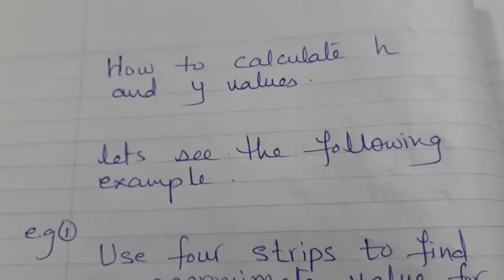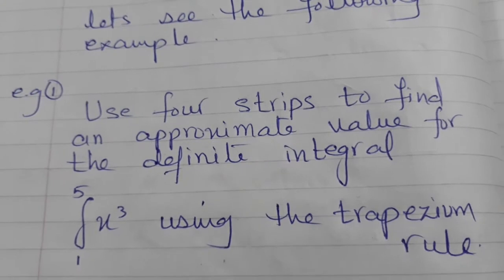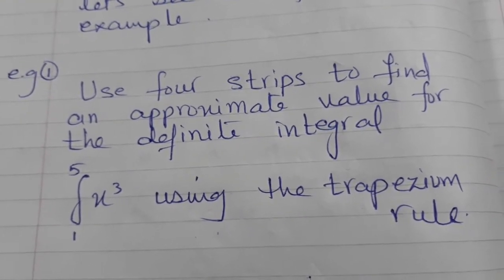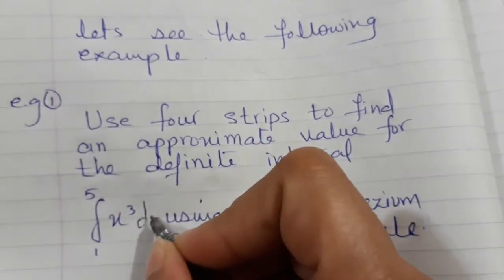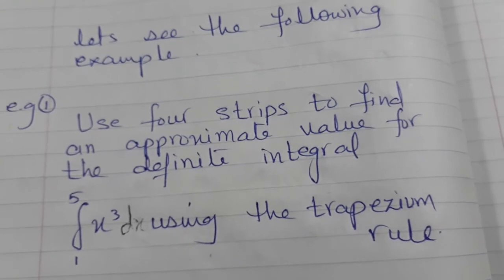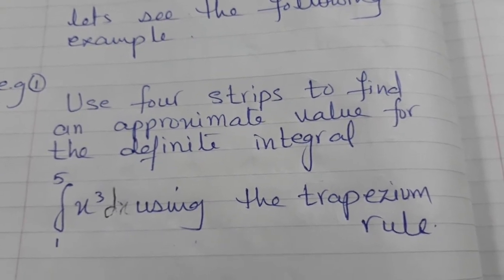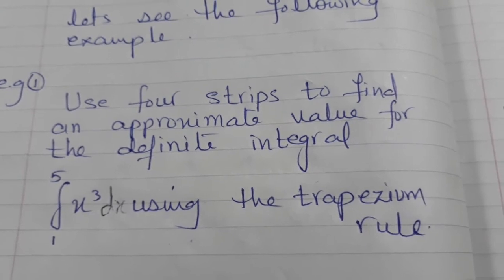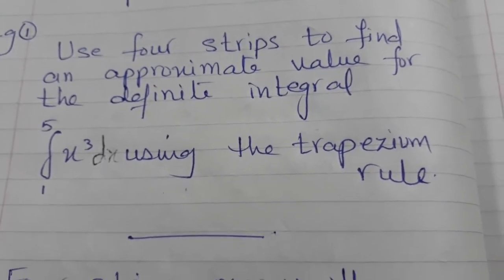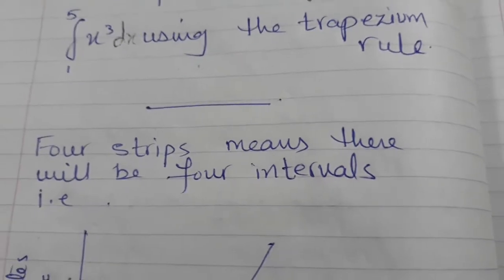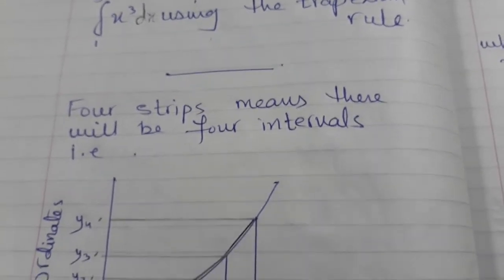Now let's see how to calculate h and the y-values to find the area. The example is: integrate x³ with limits 1 to 5, divided into four strips, which means there will be five ordinates. The value of h is calculated as: upper limit minus lower limit, divided by the number of intervals. So here it is 5 minus 1, divided by 4, which gives h equal to 1.